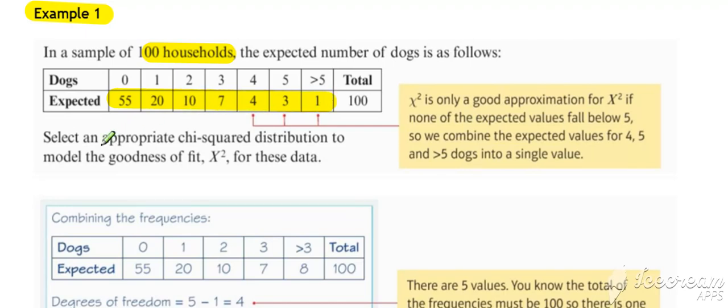Select an appropriate chi-squared distribution for this question. We need to combine any cells where the expected frequencies are less than five. Hence, it's these three last cells that need to be combined.